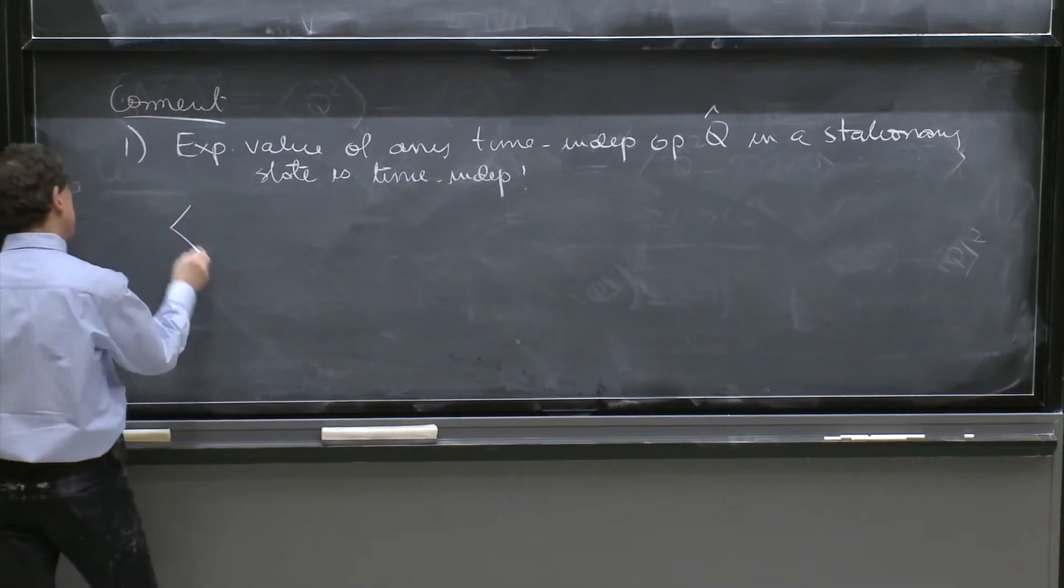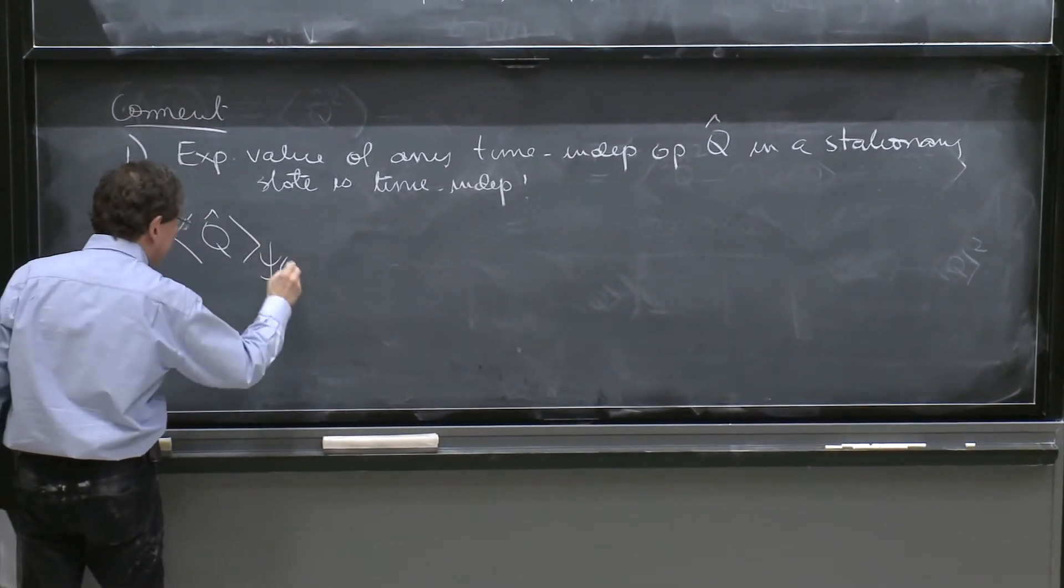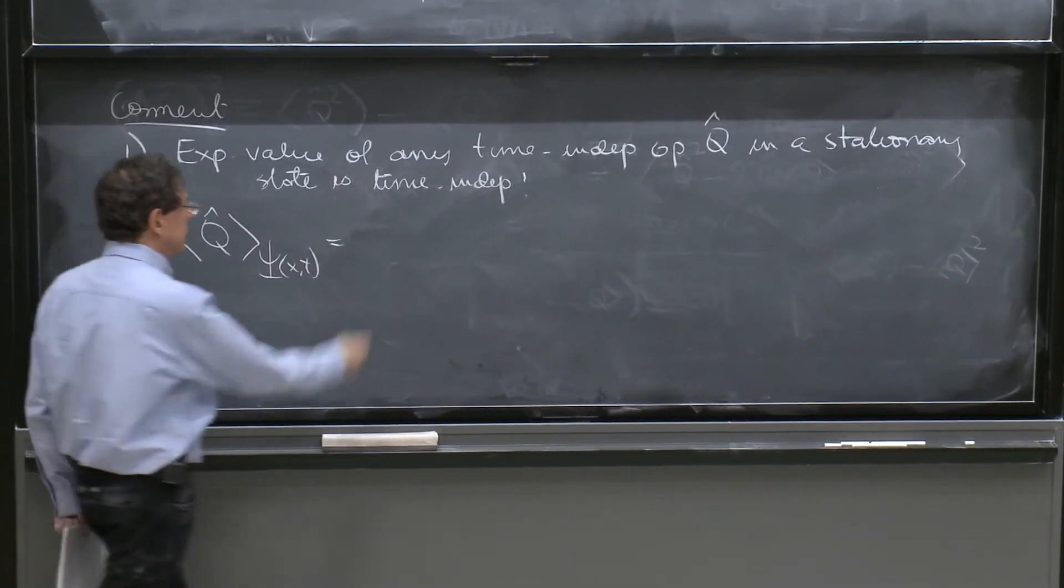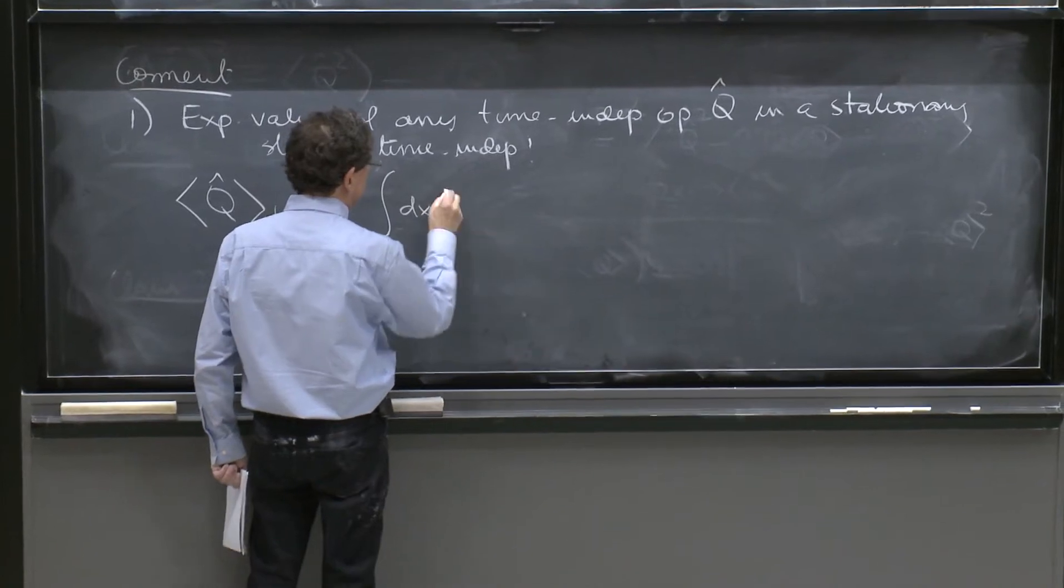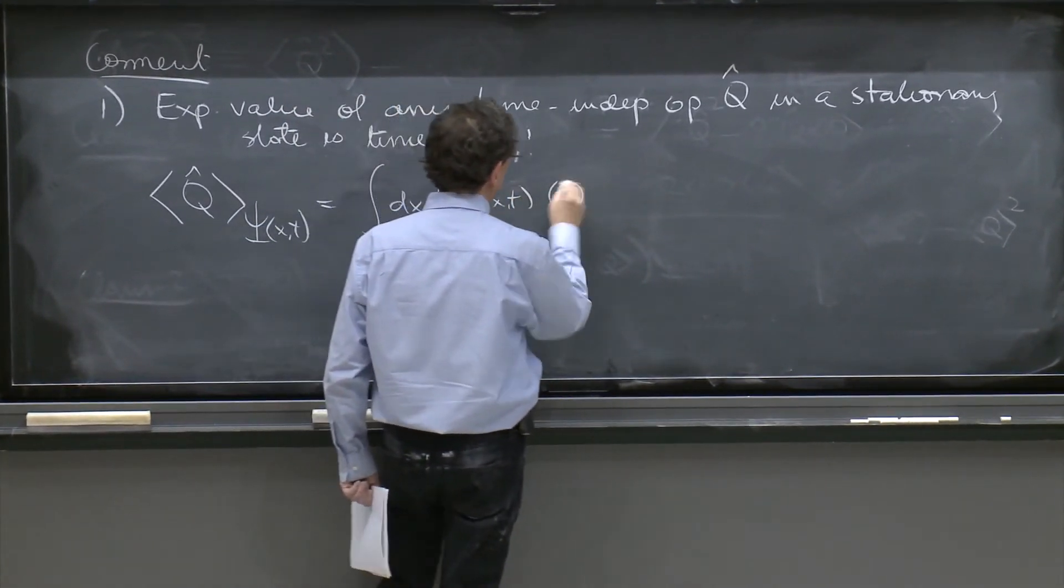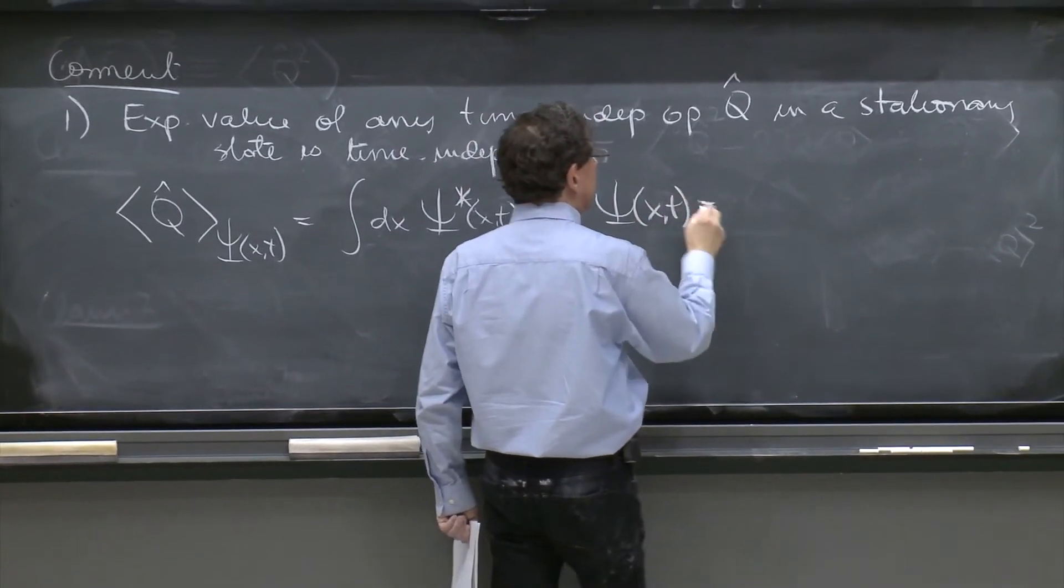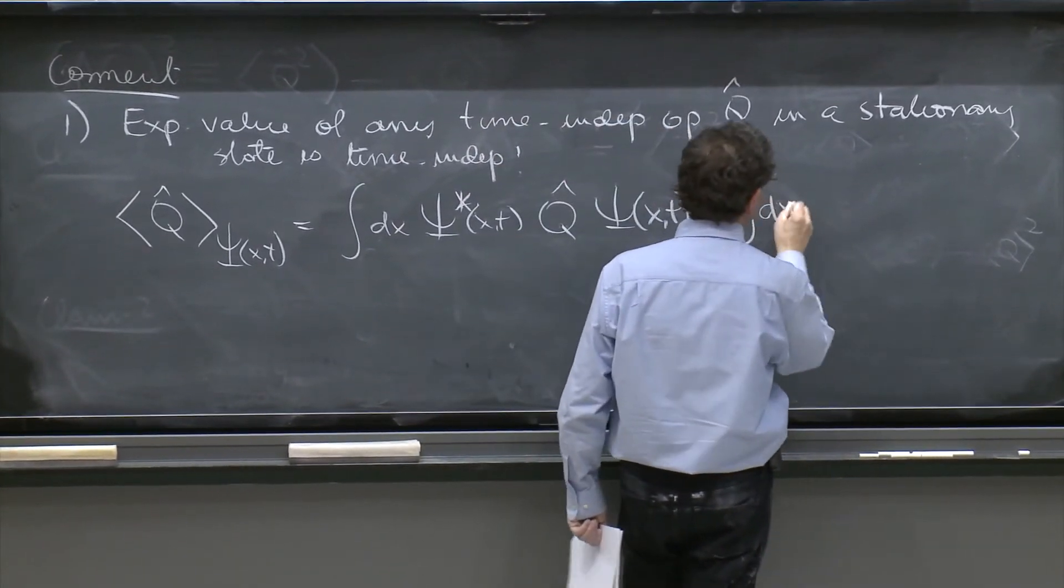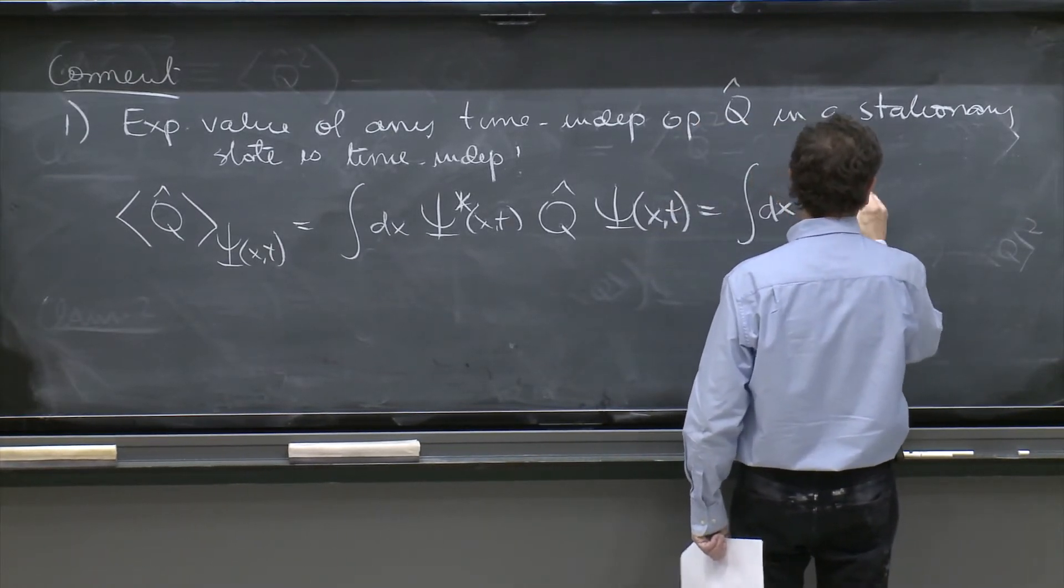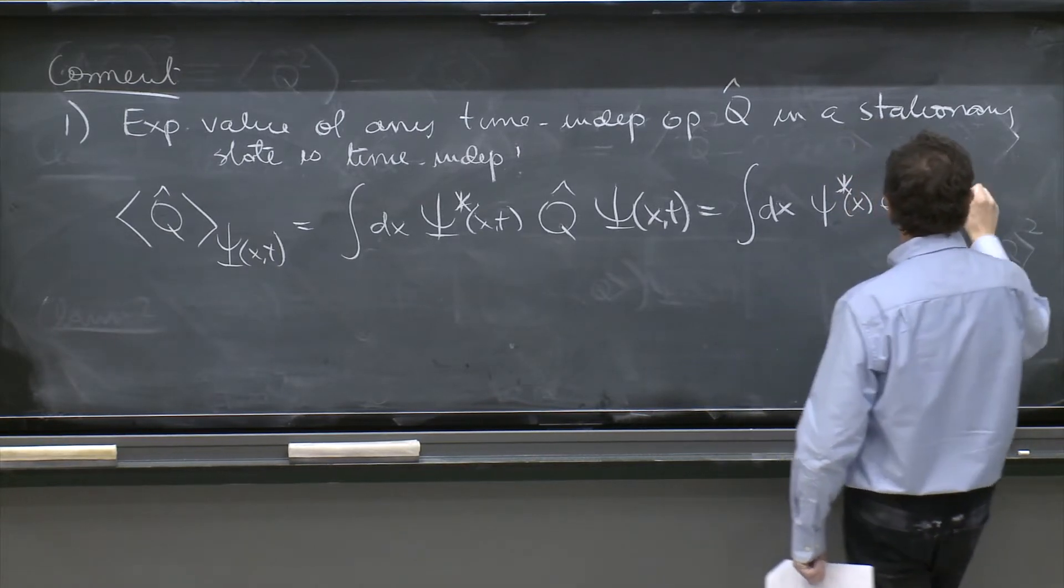So how does that go? It's just the same thing. Q hat on that psi of x and t is general now. It's integral dx capital psi of x and t, Q hat psi of x and t. Equal integral dx, you have to start breaking your things now.